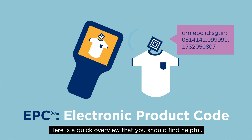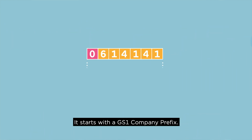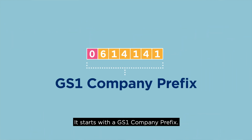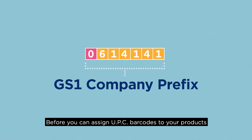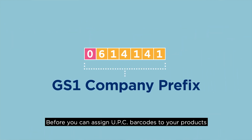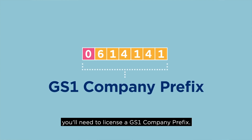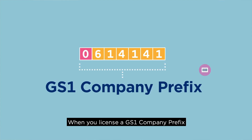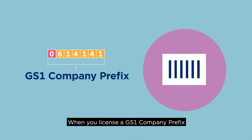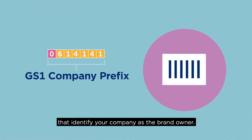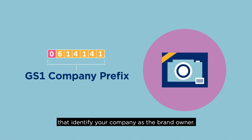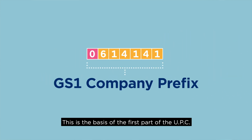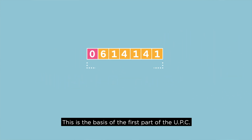Here's a quick overview that you should find helpful. It starts with the GS1 company prefix. Before you can assign UPC barcodes to your products, you'll need to license a GS1 company prefix. When you license a GS1 company prefix, you have the ability to create barcodes that identify your company as the brand owner. This is the basis for the first part of the UPC.